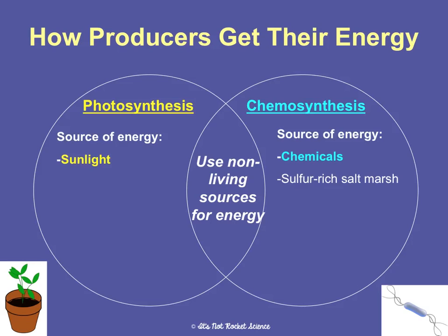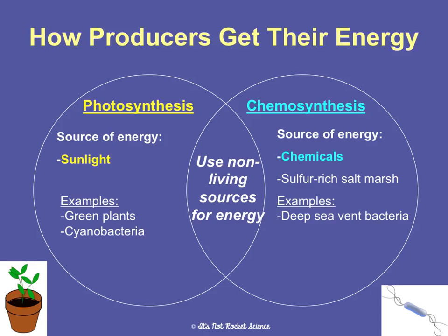Photosynthesis uses sunlight as its energy source. Chemosynthesis uses chemicals — elements and things found in sulfur-rich environments. Examples of organisms that do photosynthesis are green plants and cyanobacteria. Examples for chemosynthesis include deep sea vent bacteria. Either way, they make their own food. So if asked on an assessment what kinds of organisms are producers, don't just say plants — bacteria can be producers also.